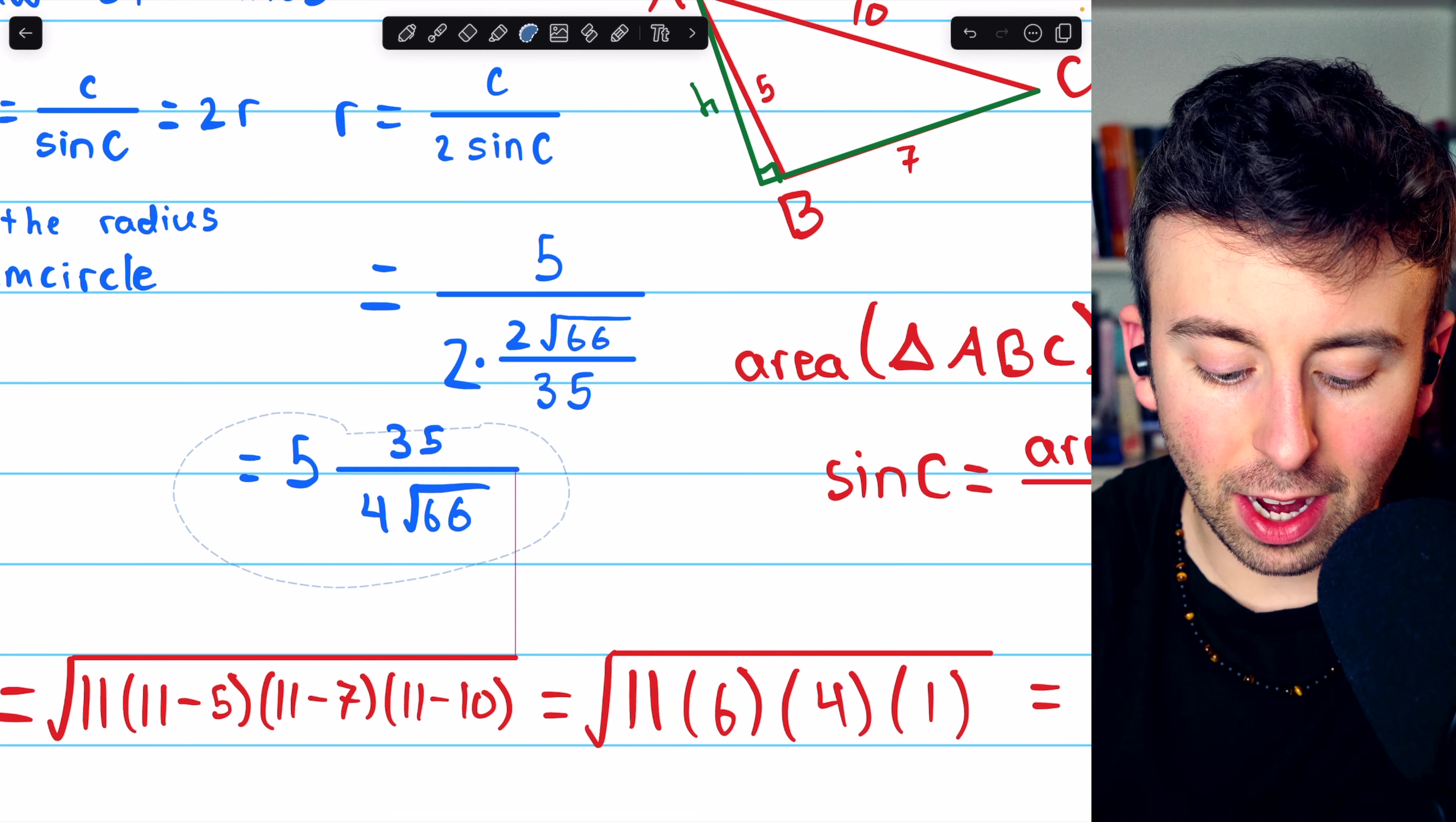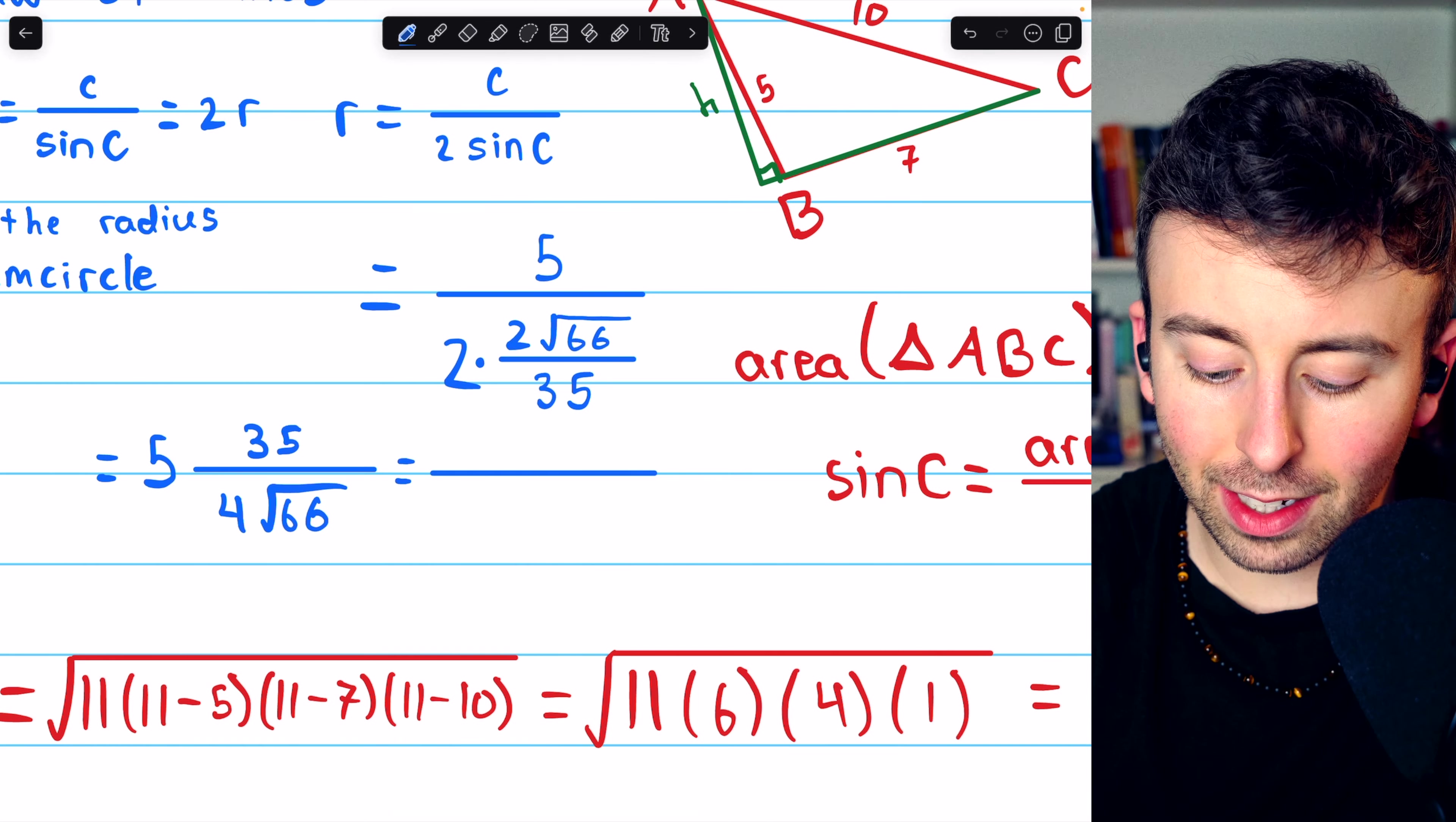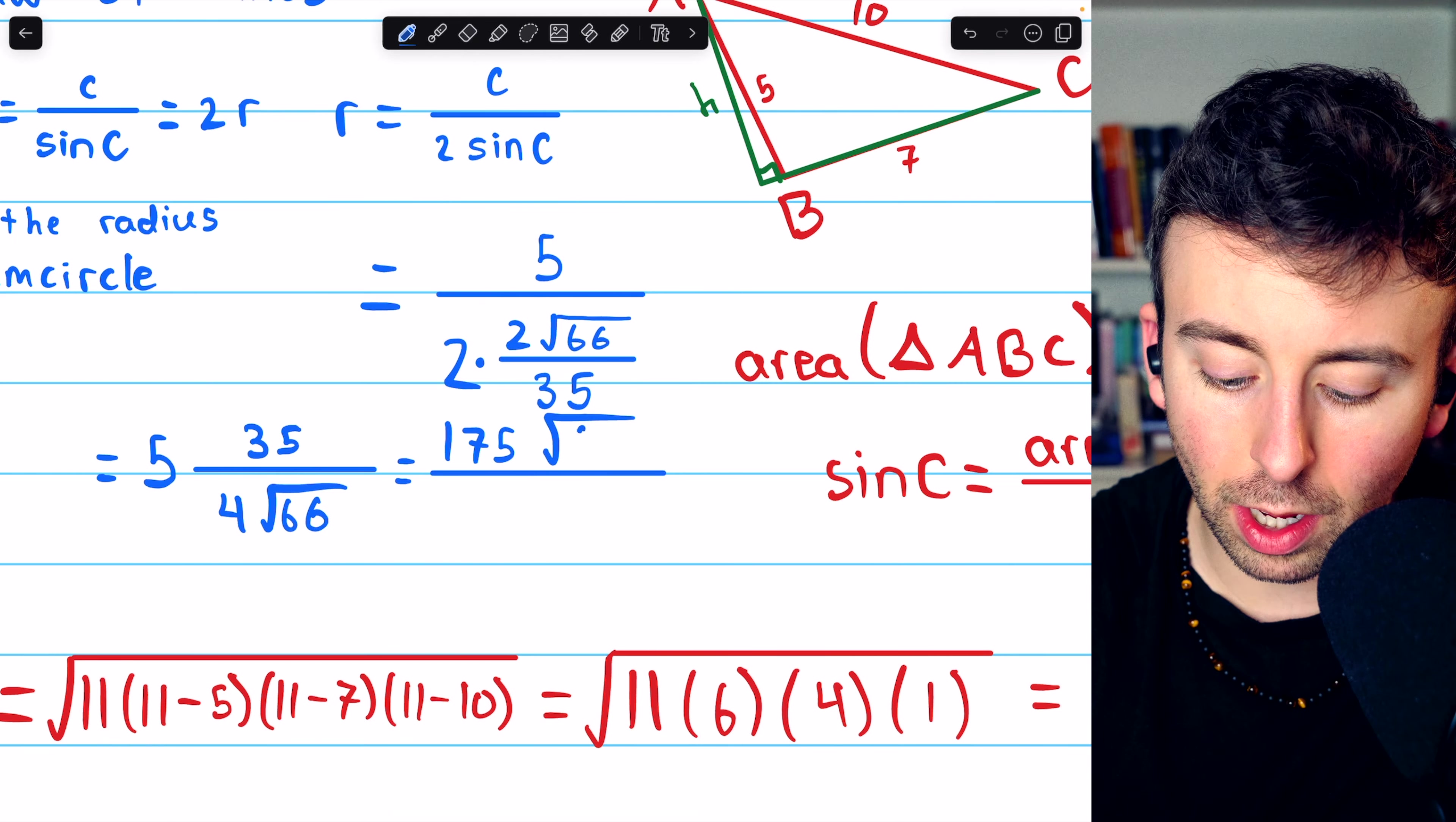There's not much more simplification we can do with this, but we can rationalize the denominator and combine the 5 and the 35. So multiplying the numerator and denominator by root 66 in order to rationalize, we're going to have 5 times 35, which is 175, multiplied by the square root of 66.